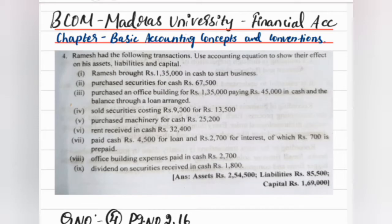Ramesh had the following transactions — use accounting equation to show their effect on his assets, liabilities, and capital. This is a big question, so we will see each transaction one by one and then check the answer, because if we look at the full question at once the video becomes very long. First: Ramesh brought ₹1,35,000 in cash to start a business — cash ₹1,35,000.